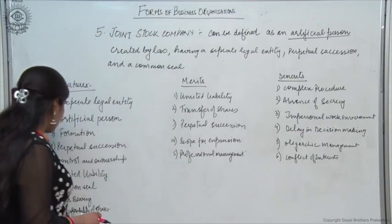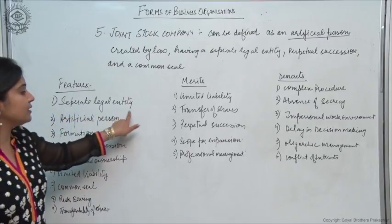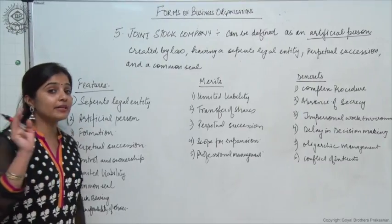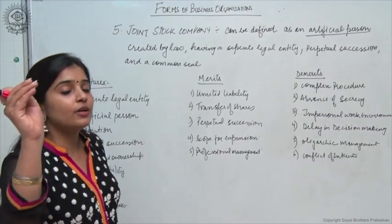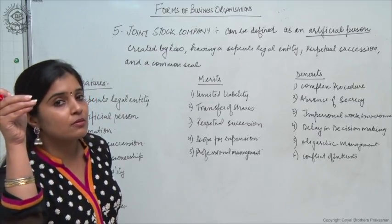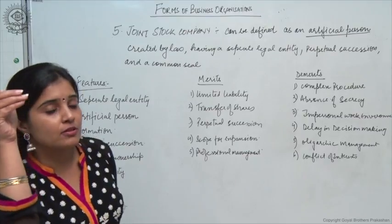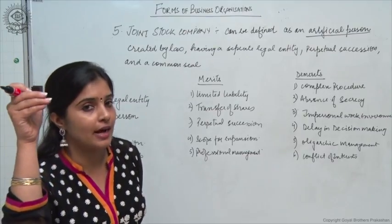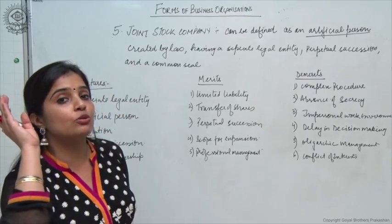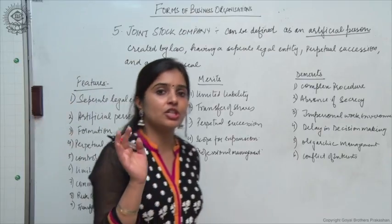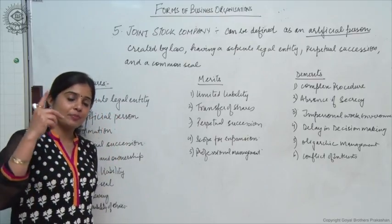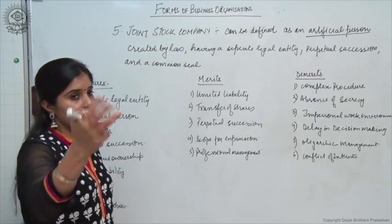What are the features of a company? Number one: separate legal entity, limited liability, and continued existence. These three features come automatically when it is compulsory for a business to get itself registered under a particular act. Here, a company is compulsorily required to be registered under the Companies Act 2013, and so three features automatically follow: separate legal entity, limited liability, and continued existence.